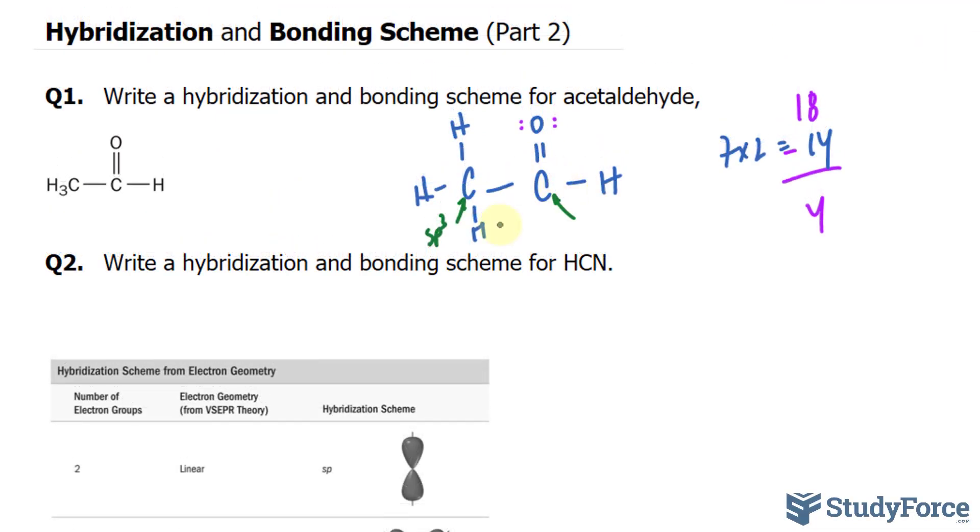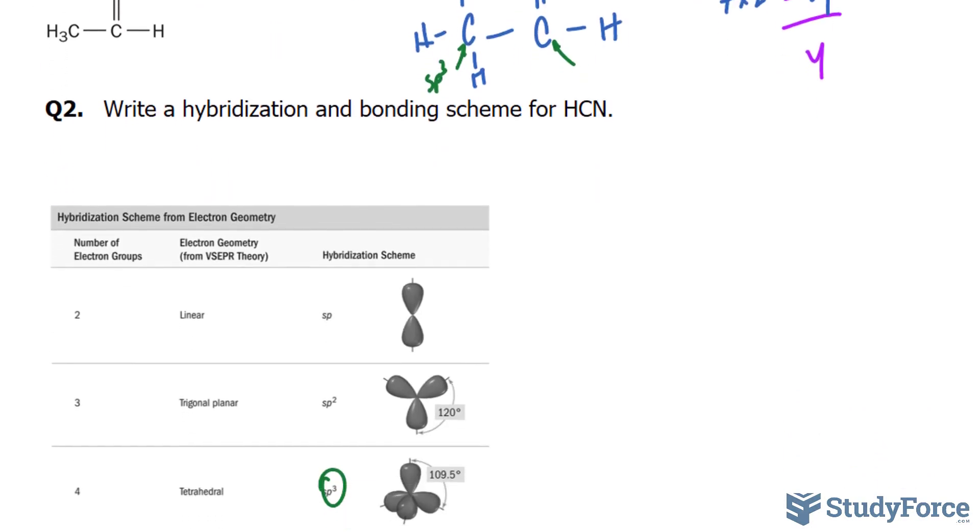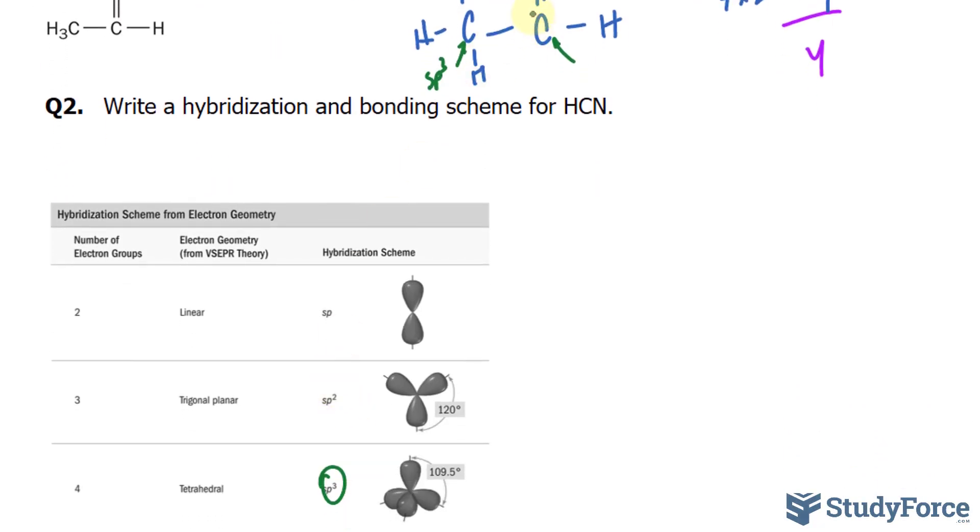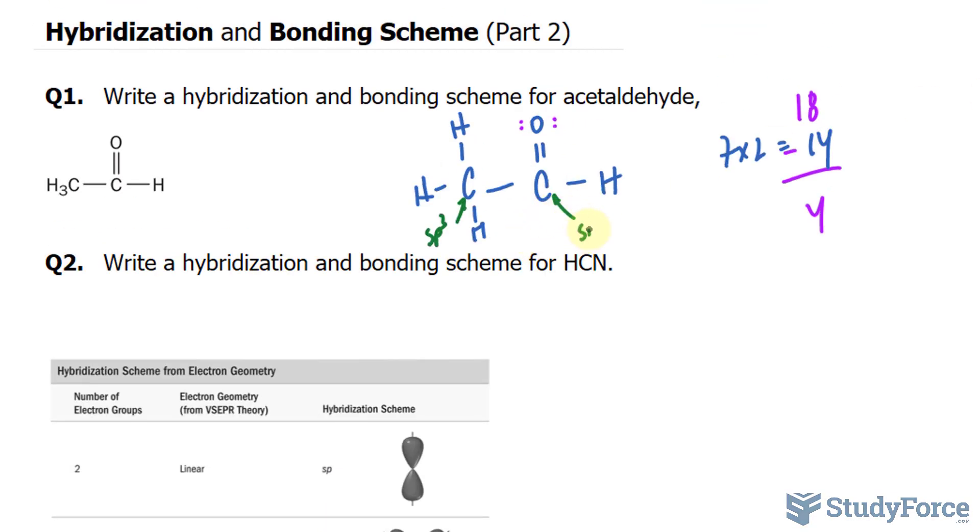For this central atom, that carbon, the total number of bonding groups are one, two, and three. It has no lone pairs, therefore, this has a hybridization scheme of sp2. I'll write that down, sp2. So the first requirement of this question is done. We found out the hybridization.